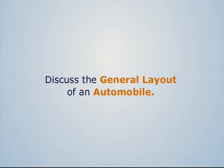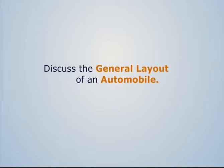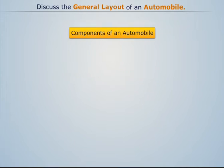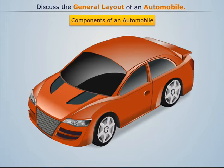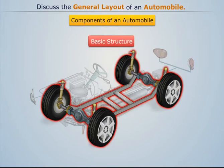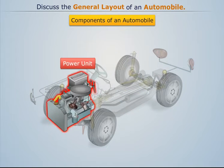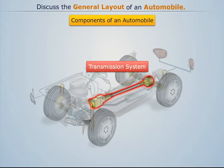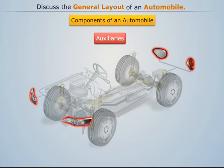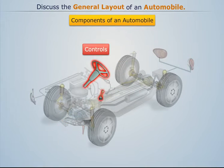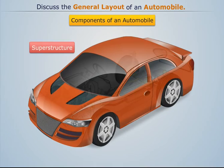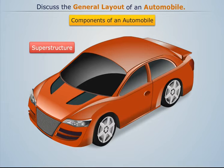Let's discuss the general layout of an automobile. The main components of an automobile are basic structure, power unit, transmission system, auxiliaries, controls, and superstructure. Now let's try to understand how the power from the engine reaches the wheels.